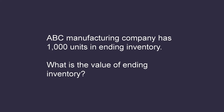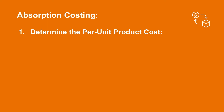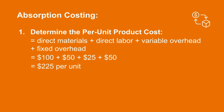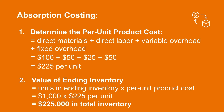So if ABC Manufacturing Company had 1,000 units in ending inventory, what would be the value of that ending inventory? The first step would be to determine the per unit product cost. Let's calculate this using absorption costing first. Remember the formula is direct materials plus direct labor plus variable overhead plus fixed overhead, giving us the absorption product cost. In this case, we would take $100 in direct materials plus $50 in direct labor, plus $25 in variable overhead plus $50 in fixed overhead, giving us $225 per unit. The value of ending inventory equals units in ending inventory times the per unit product cost, so multiplying by 1,000 units gives us $225,000 in total inventory.